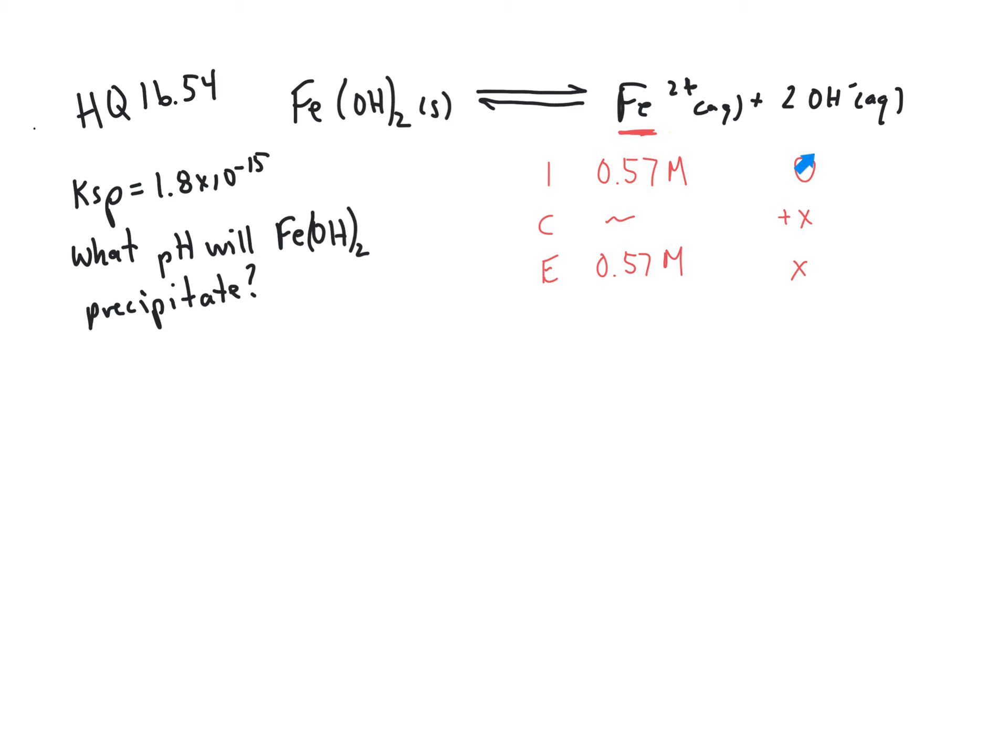These two concentrations are not together. The iron is already in solution. We know that concentration. We want to find what would be the concentration we could hold of hydroxide from the iron(II) hydroxide with this amount of iron already in solution. So that means we're only really solving for the concentration of hydroxide.